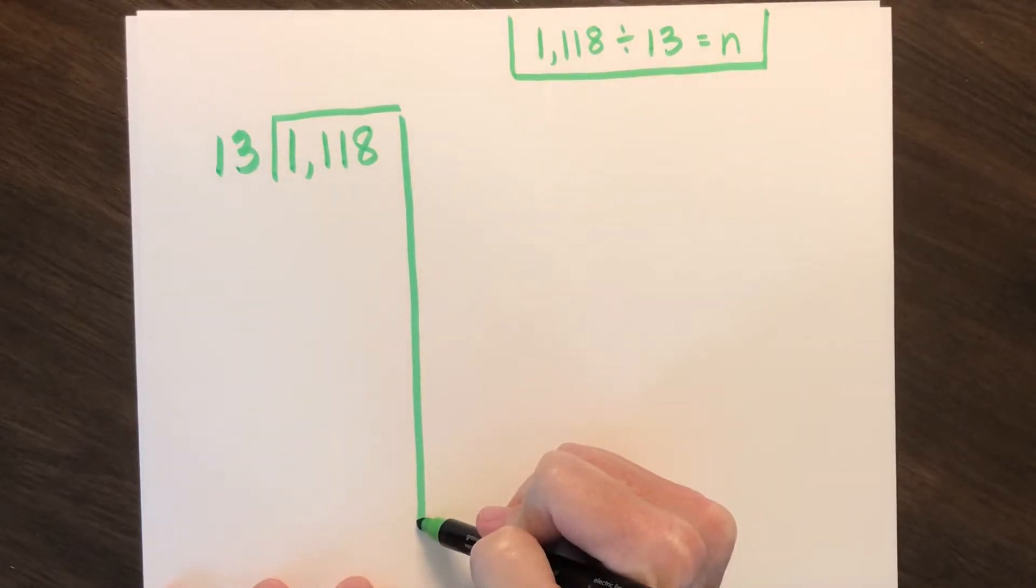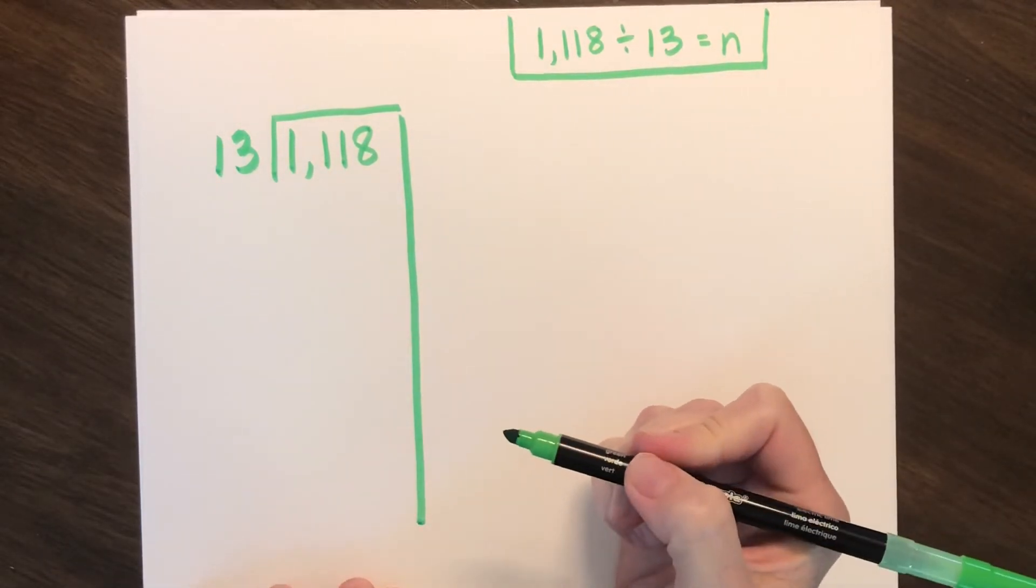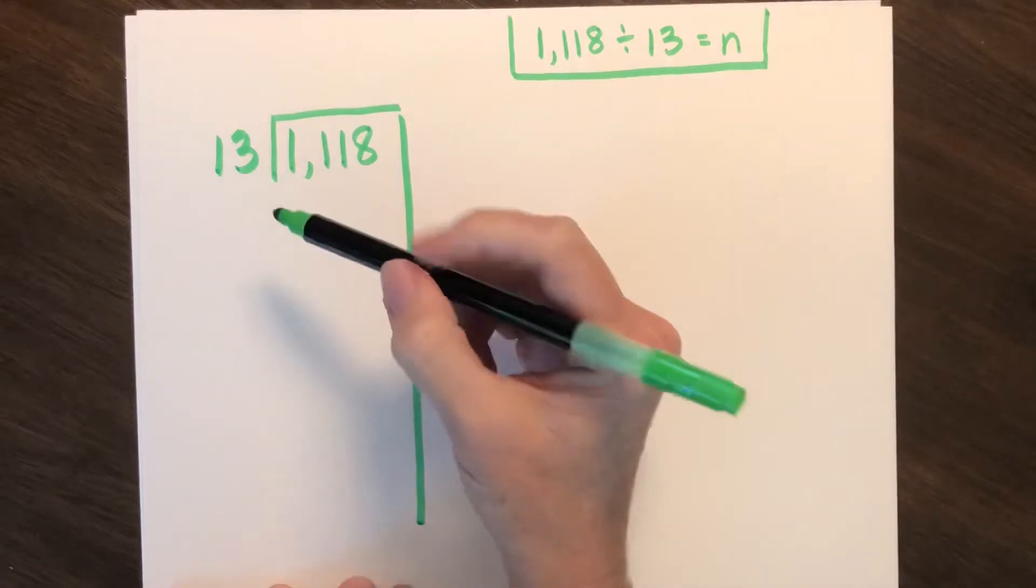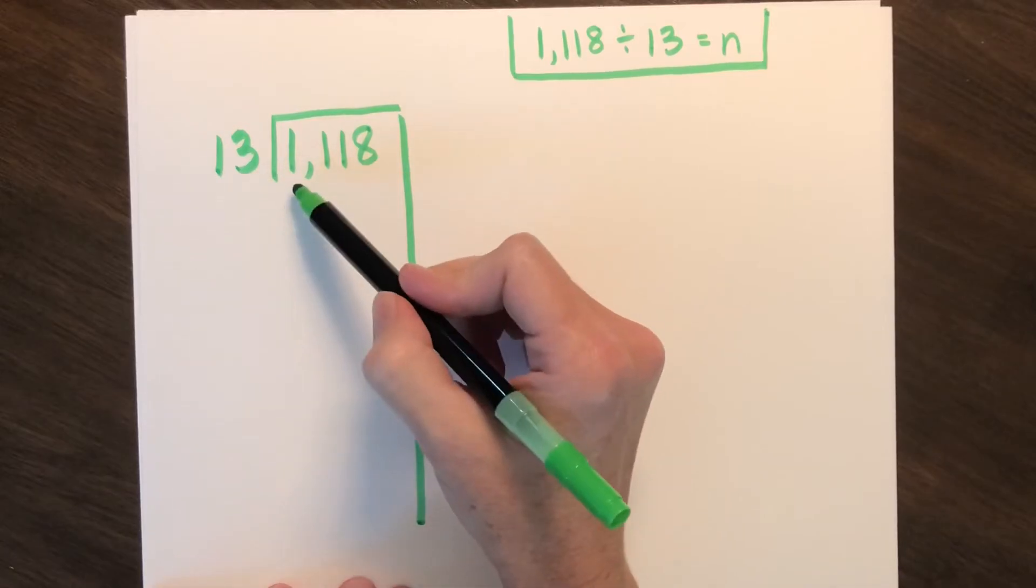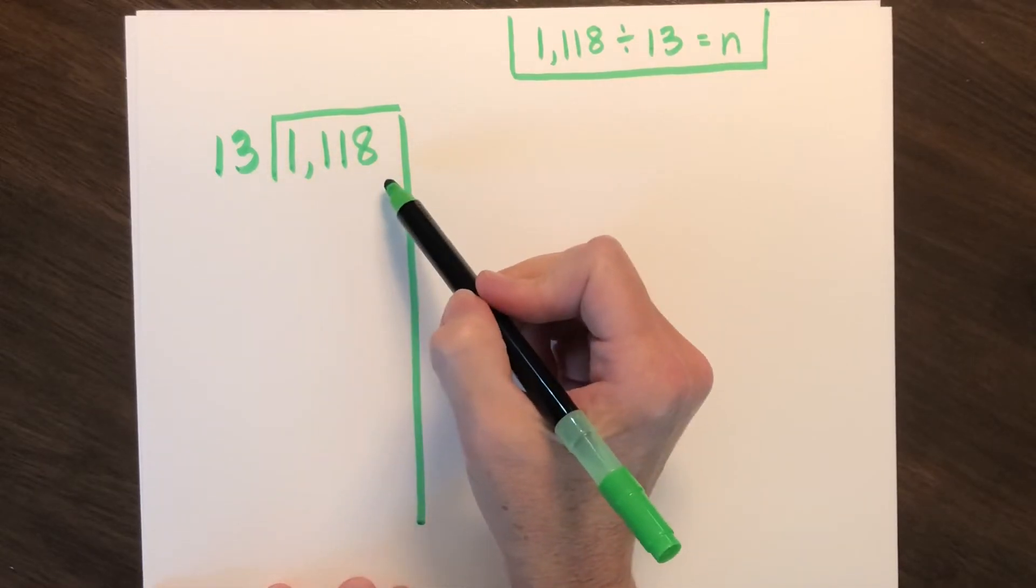Did you take your dividend and divide by your divisor? Great job, if you've remembered your vertical line. Now, we want to think, how many groups of 13 will go into 1,118?